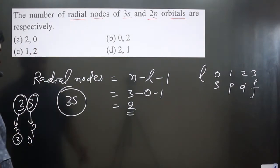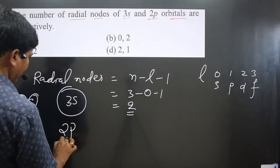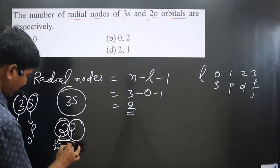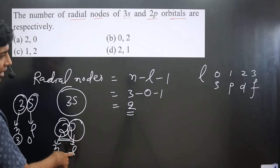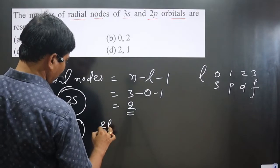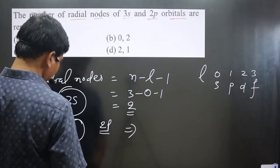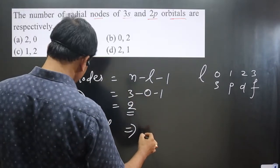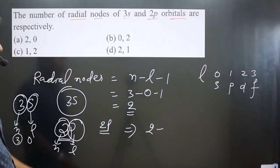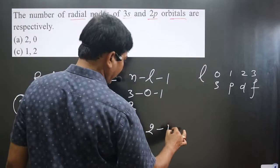Now we go for 2p. This is the n value, this is the l value. l value is 1 for p orbital. For 2p, if we calculate number of radial nodes, the formula is n value 2 minus l value 1 minus 1.